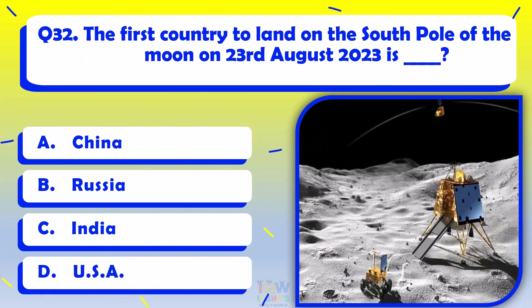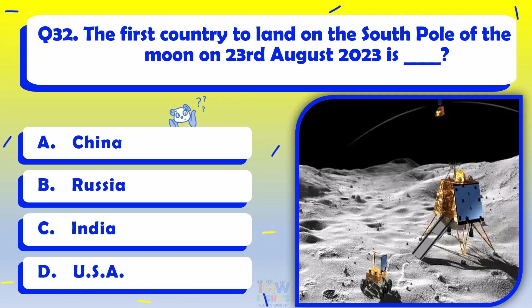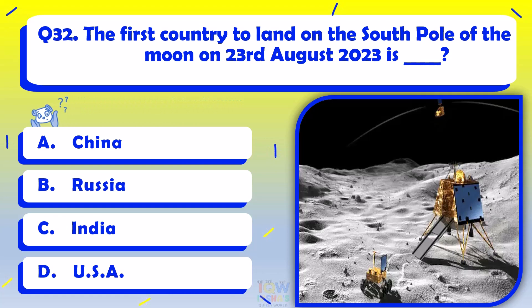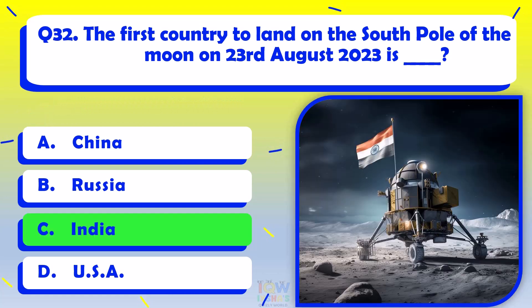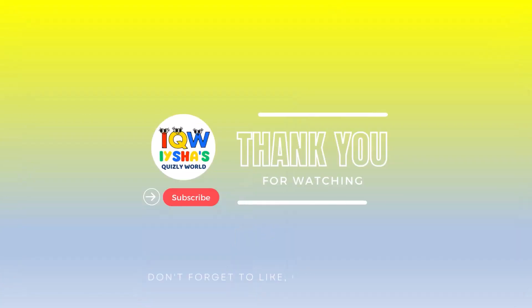The first country to land on the South Pole of the Moon on August 23, 2023 is? India.